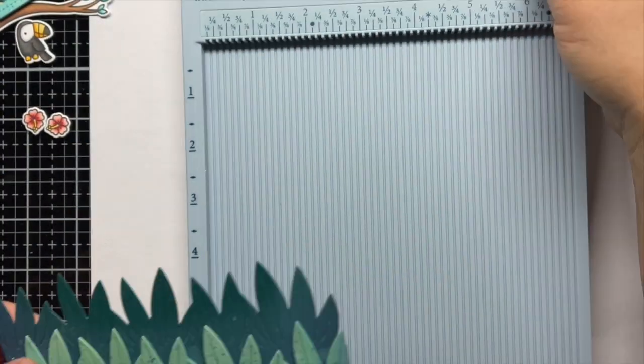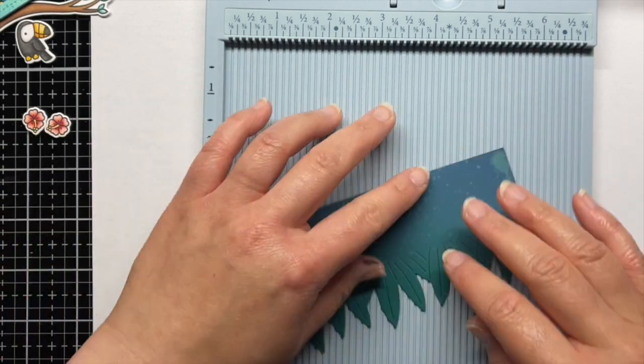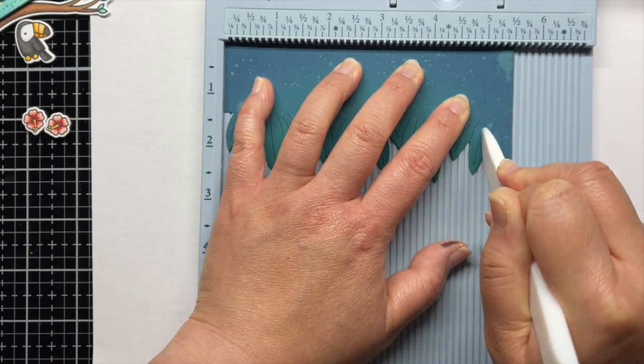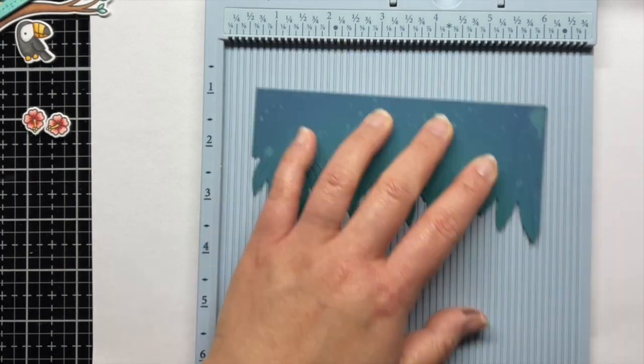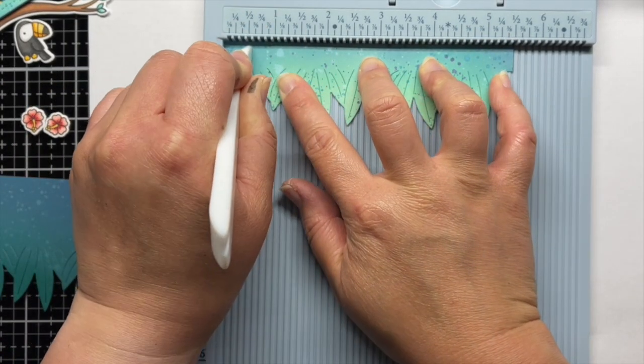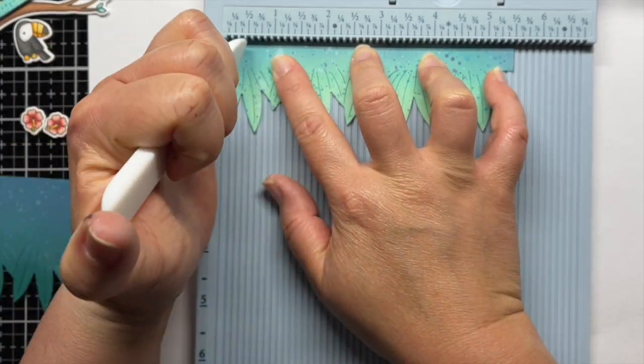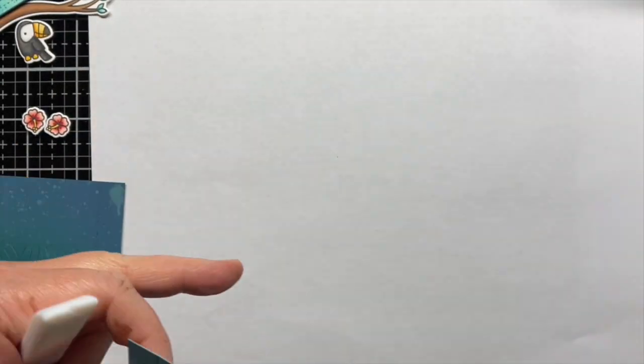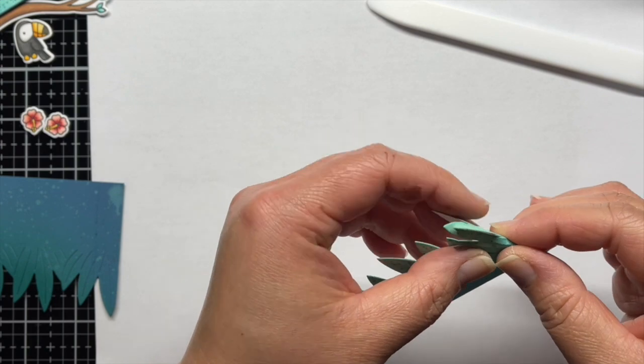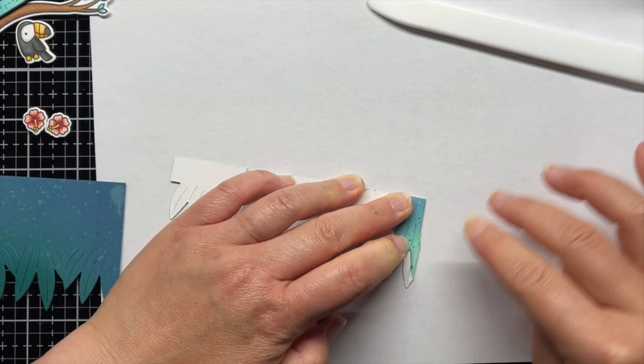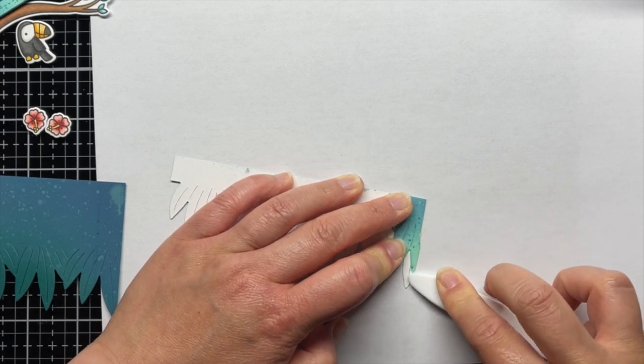Then I take my tropical leaves borders and score the left end of the rainforest cardstock and the right end of the blended cardstock a half inch from the edge. I fold them on the score line and use a bone folder to get a good crease. That small folded area is what will eventually be attached to this background panel.